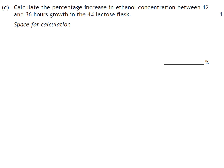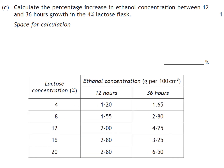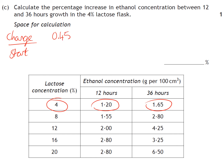Calculate the percentage increase in ethanol concentration between 12 and 36 hours in the 4% flask. We started at 1.2 and went to 1.65. Percentage increase means we're looking for change divided by the start, then times by 100. Our change is going from 1.2 to 1.65, so 0.45 over our start of 1.2 — that's 0.45 divided by 1.2, times 100, and that's your answer.